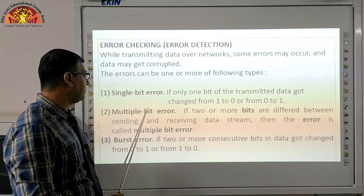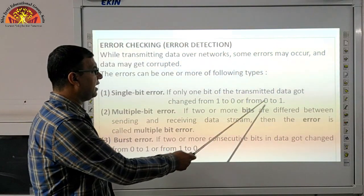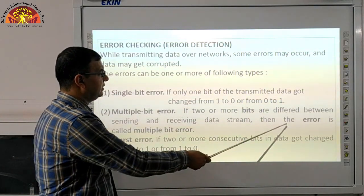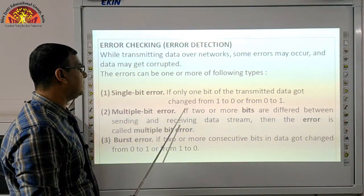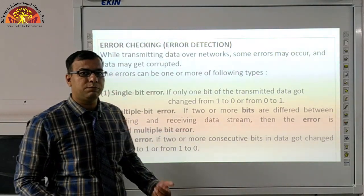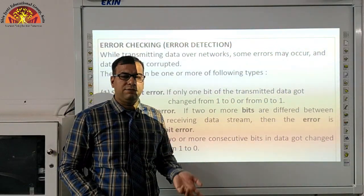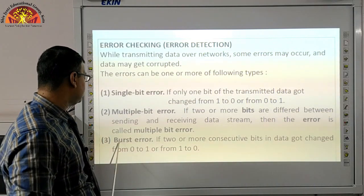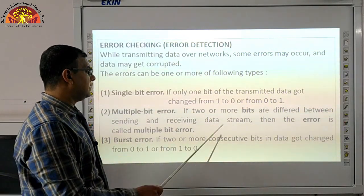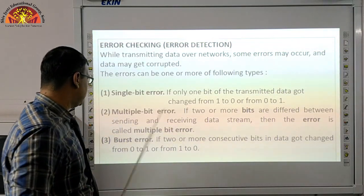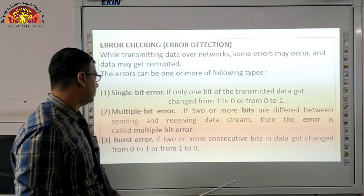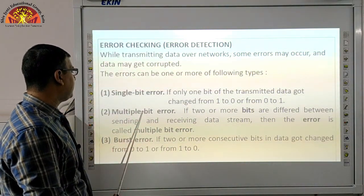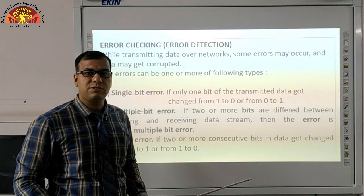Second is multiple bit error: if two or more bits are different between the sending and receiving data stream, the error is called a multiple bit error. If two or more bits change from 1 to 0 or 0 to 1, that is multiple bit error. Third is burst error: if two or more consecutive bits in data got changed from 0 to 1 or from 1 to 0. So three types of errors: single bit error, multiple bit error, and burst error.